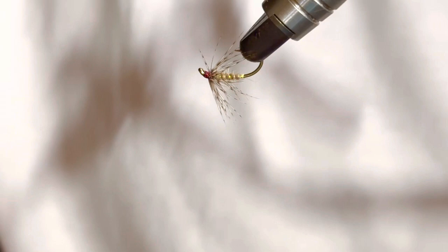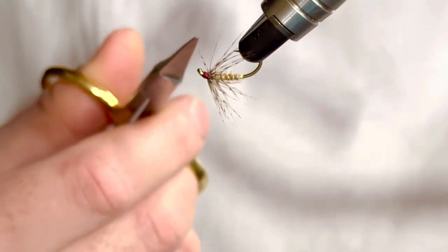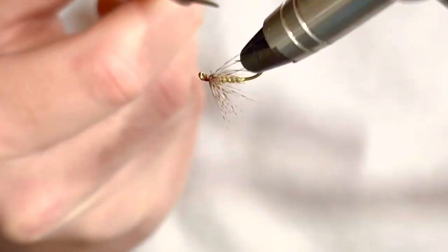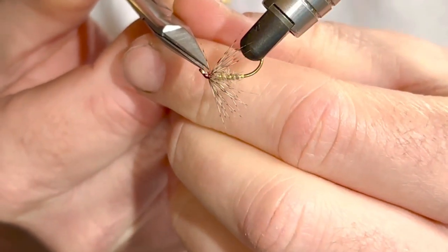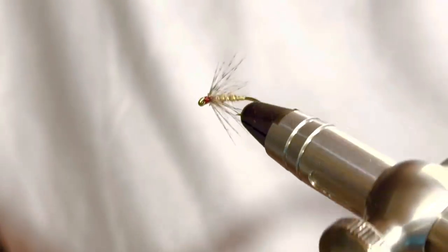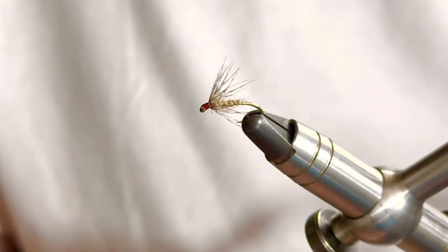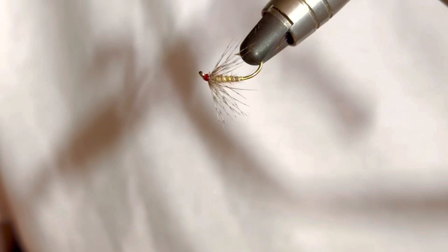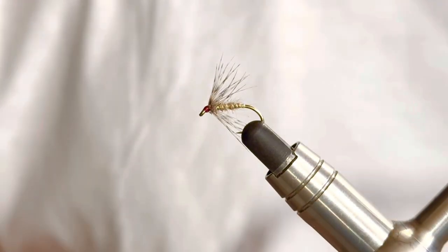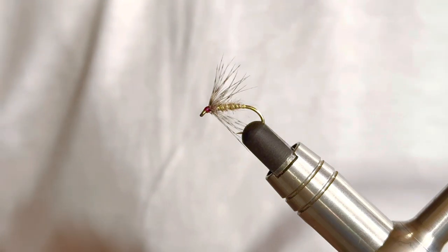When you come to do this, you can then remove a few of the stray fibers if you feel you need to. There's one there, and another one there. And there you go. So there's a March brown spider. Like I say, you can fish this pattern year round and it works just as well. I hope you've enjoyed that.